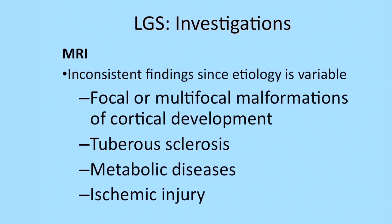Every child with Lennox-Gastaut syndrome should have an MRI, but there are no classic features for Lennox-Gastaut on MRI because the etiology is very different, so the findings are inconsistent. You can see focal or multifocal malformations of cortical development, evidence of ischemic injury from the perinatal period or early childhood, manifestations of tuberous sclerosis, or MRI features of metabolic disorders.